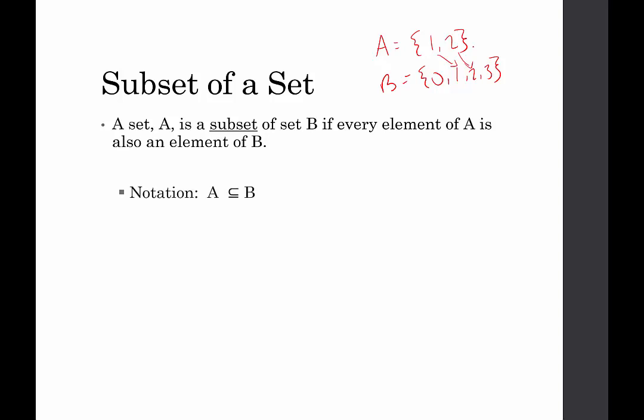The notation we would use is we would read this as A is a subset of B. And the way that I tend to remember the notation for subset is this almost looks like the less than or equal to. So it's like there has to be fewer elements in set A or the same number of elements in set A as there are in set B. So it's kind of how I remember it in a weird sort of way. Maybe that'll work for you.